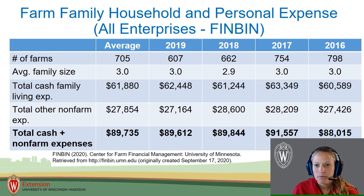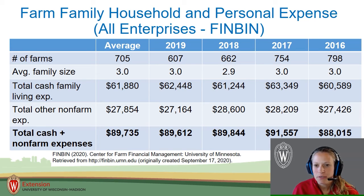There are several states represented in this data set including Wisconsin and Minnesota farms collected in 2016 through 2019. When reviewing these four years of farm, family, household, and personal expenses, you may be surprised by the total cash and non-farm expense amounts. Total cash family living expense encompasses food and meals, health, life and disability insurance, household supplies, and recreation expenses.